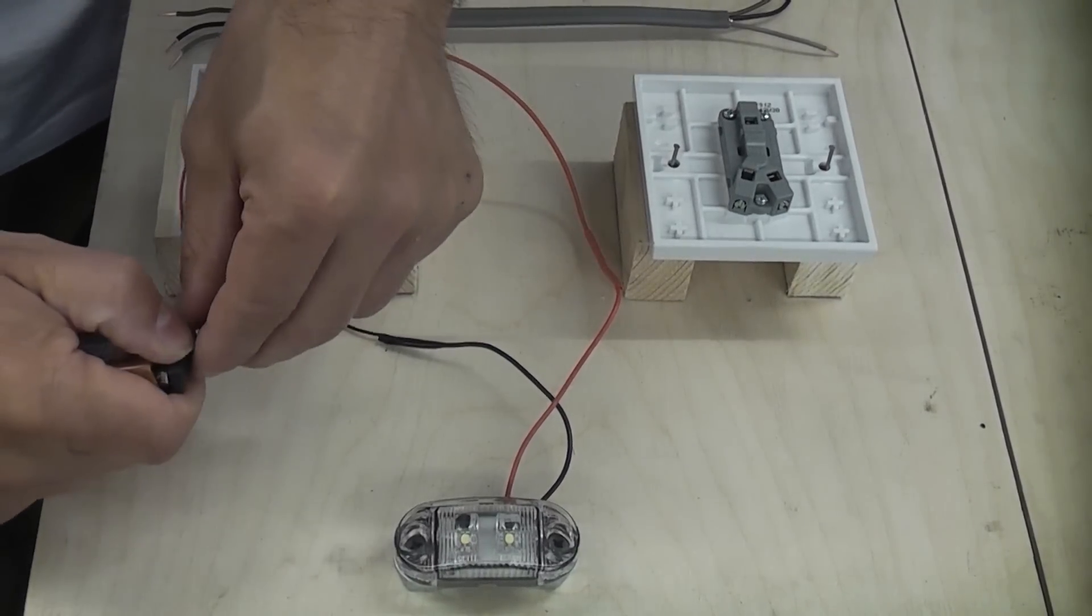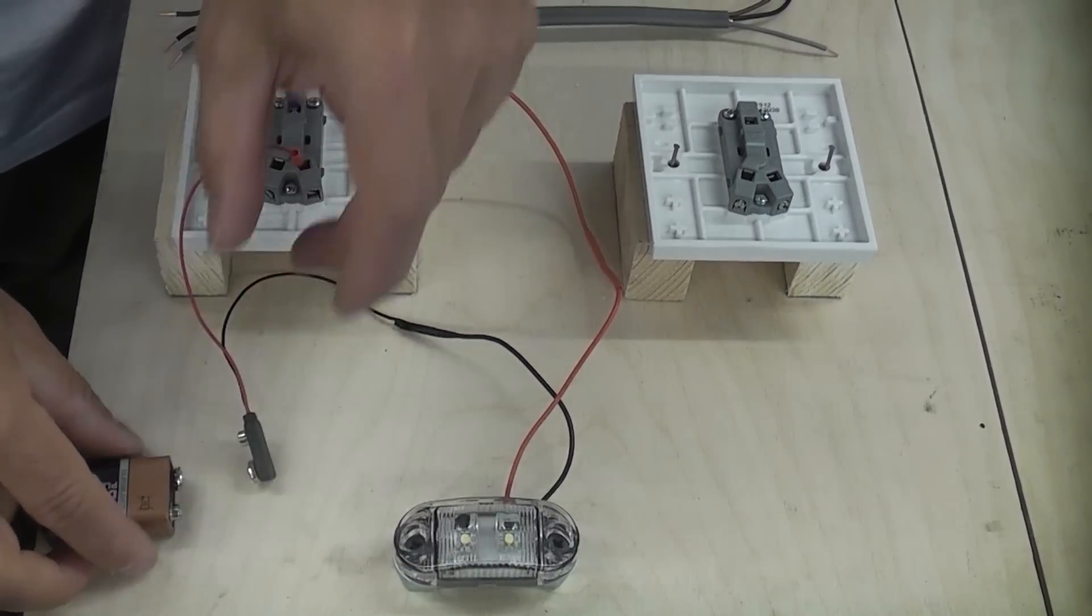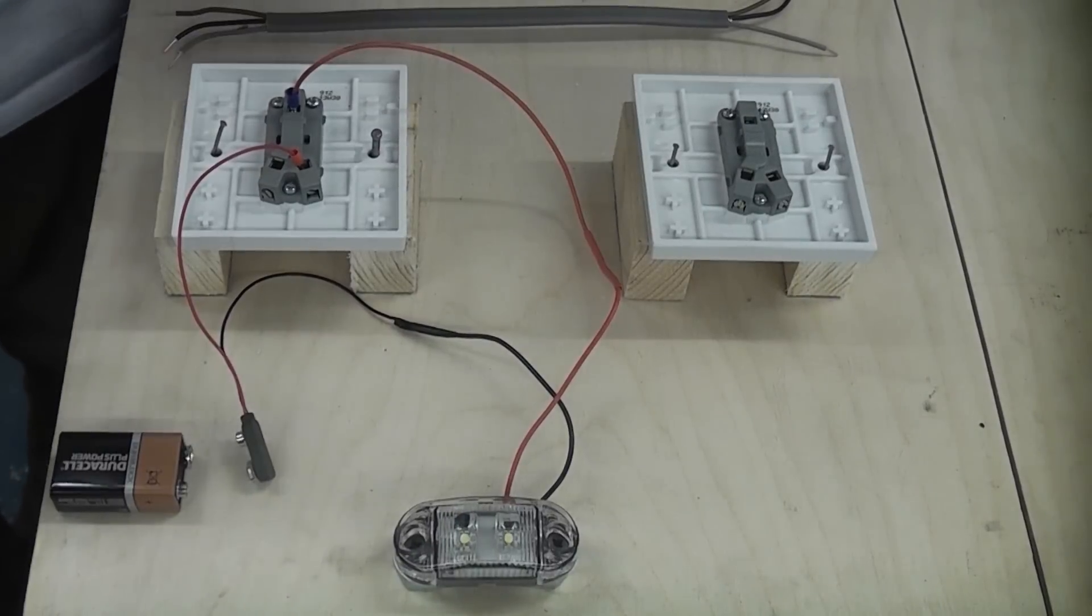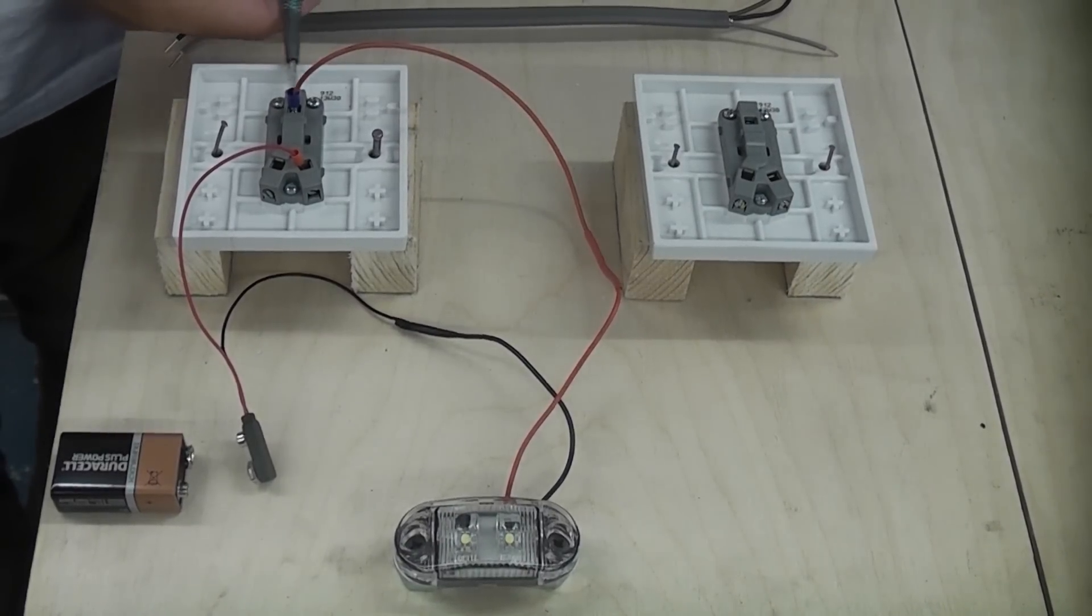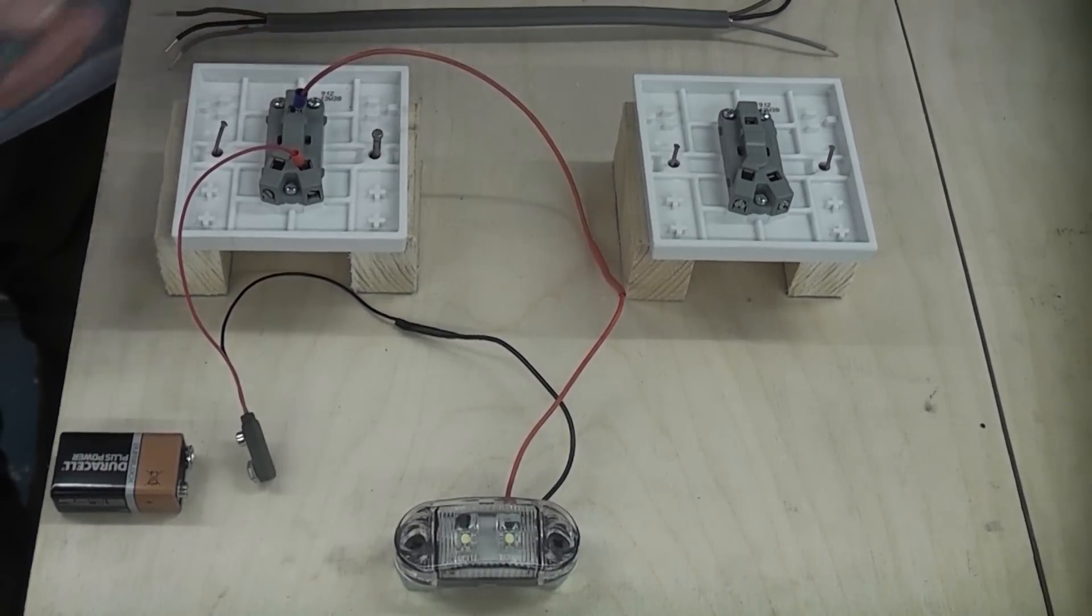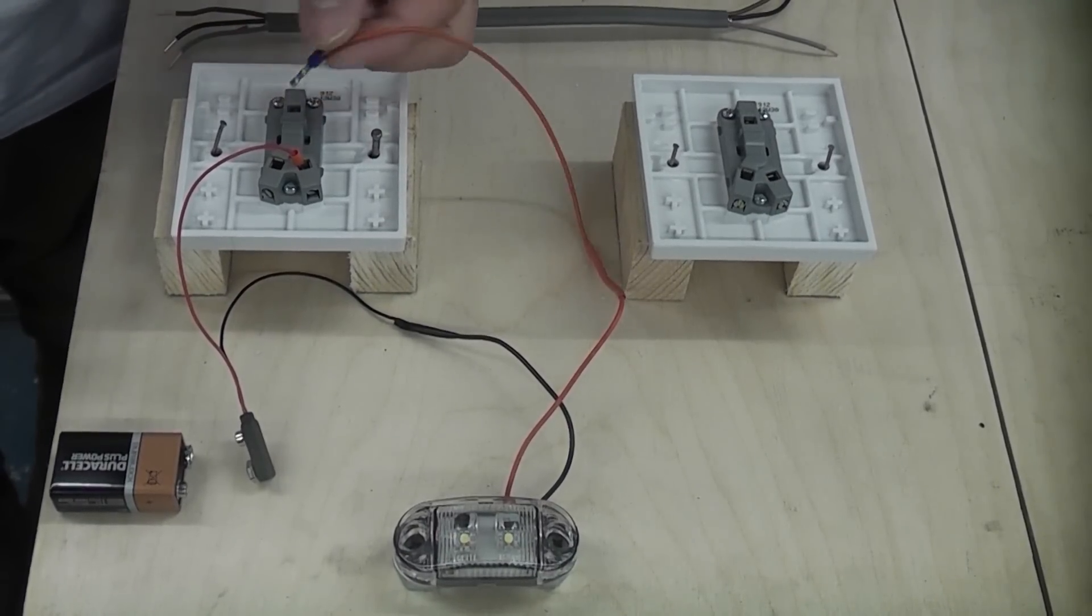I'm now just going to disconnect the battery, which at all would mean switching off and isolating the circuit. I'm now going to undo the wire that's in the comm terminal and I'm going to place that into the L2 terminal.